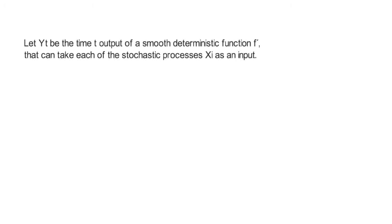Now let Yt be the time t output of a smooth deterministic function which we call f. That function can take each of the stochastic processes xi as well as time as an input. This means the following holds: f of t comma x1t up to xnt is equivalent to Yt.